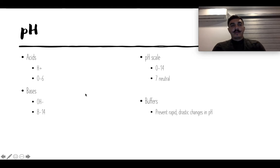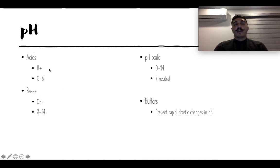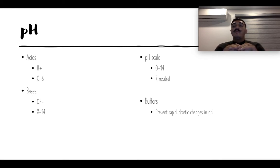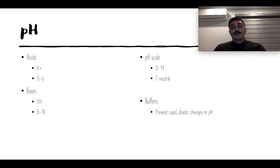We can talk a little bit about pH. We've got our acids on one end and our bases on the other. Zero through six are acids, seen as H+. Bases are OH−, from 8 through 14. The pH scale goes from 0 to 14, with 7 being neutral. The biggest thing is that our body has buffers that prevent drastic changes in pH. Since we're trying to stay in homeostasis, these buffers can either release H+ or OH− to make conditions more acidic or more basic to maintain that good balance.